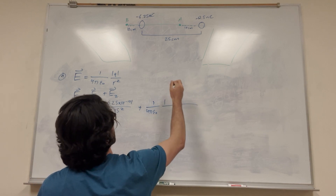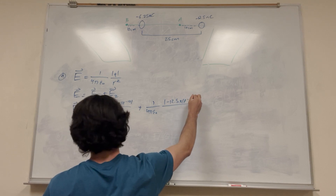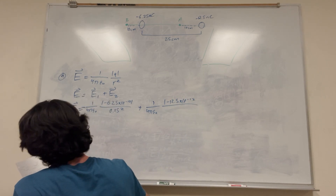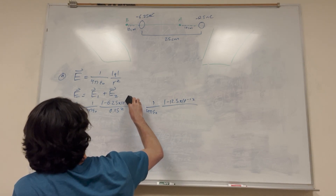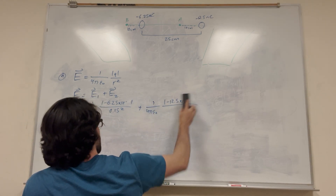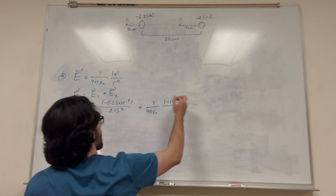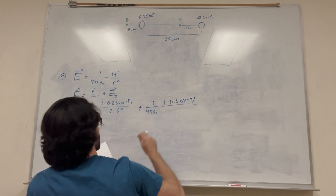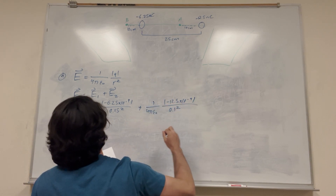So this is also going to be 1 over 4 pi epsilon naught, and this charge is negative 12.5 times 10 to the negative 9 — nano is 10 to the negative 9, sorry about that. And then the distance between those two is 10 centimeters, so 0.1 meters squared.